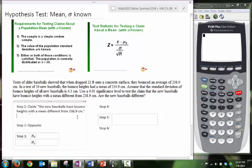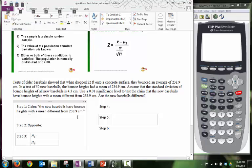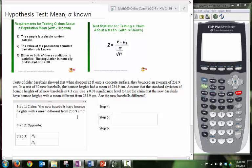Now we want to state that in mathematical terms. In mathematical terms, the mean for the population is mu, and it's different from 238.9. The units aren't really necessary here, but we'll just put them on anyways: 238.9 centimeters.